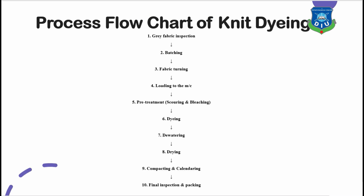Let's look at the process flow chart of knit dyeing. First, gray fabric inspection, then batching, then fabric turning, then loading to the machine, then pre-treatment — which includes scouring and bleaching (bleaching is not mandatory for knit dyeing) — then dyeing, then dewatering, then drying, then compacting and calendaring, and finally final inspection and packing.